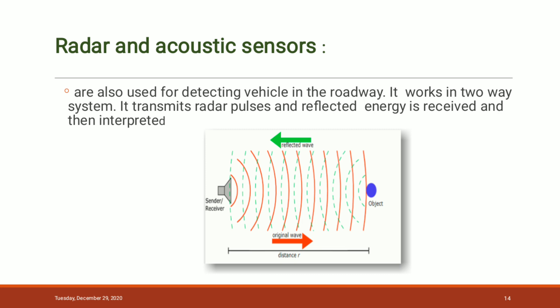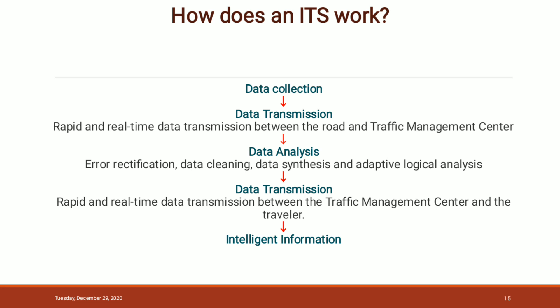Let's discuss how ITS works. The first step is data collection. Data such as traffic count, speed and time location of vehicles, delays, etc. are collected by sensors, cameras, GPS, etc. After that, data transmission is done — rapid and real-time data transmission between the road and the traffic management center. Then data analysis is done, including error rectification, data cleaning, data synthesis, adaptive logical analysis, etc. Then data is retransmitted between the traffic management center and the traveler, and intelligent information is obtained.